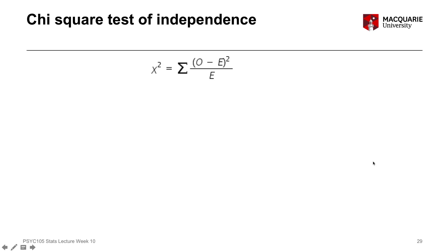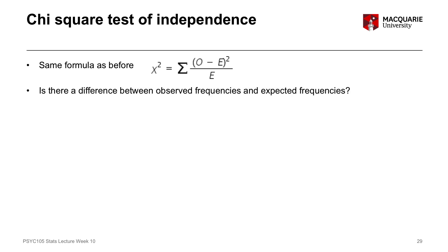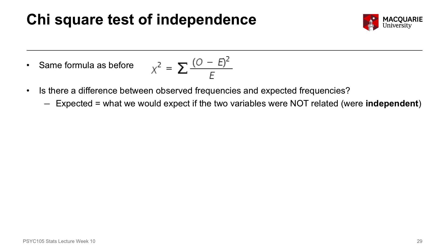If we want to do our actual chi-square test of independence, it's the same formula as the previous chi-square goodness of fit test, because it's the same kind of test. It's just that we've got more different kinds of cells in this particular instance, because we've got four individual cells — two independent variable categories and two dependent variable categories. What we're trying to see with this formula is whether there's a difference between the observed frequencies and the expected frequencies. In a chi-square test of independence, expected frequencies are what we would expect to see in each of the cells if there was no relationship between the variables, if the variables were independent.